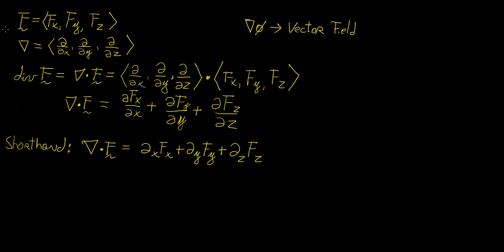Now let's say that we did the opposite — let's say we started off with some vector field, so we have a function that has a function in each of its components. We're going to grab the DEL operator, which is actually a vector function in itself, with the x component being the derivative with respect to x, the second with respect to y, and so on. We're going to define a new kind of operation called the divergence of the vector field f, defined as the vector dot product between the vector field and the NABLA operator.